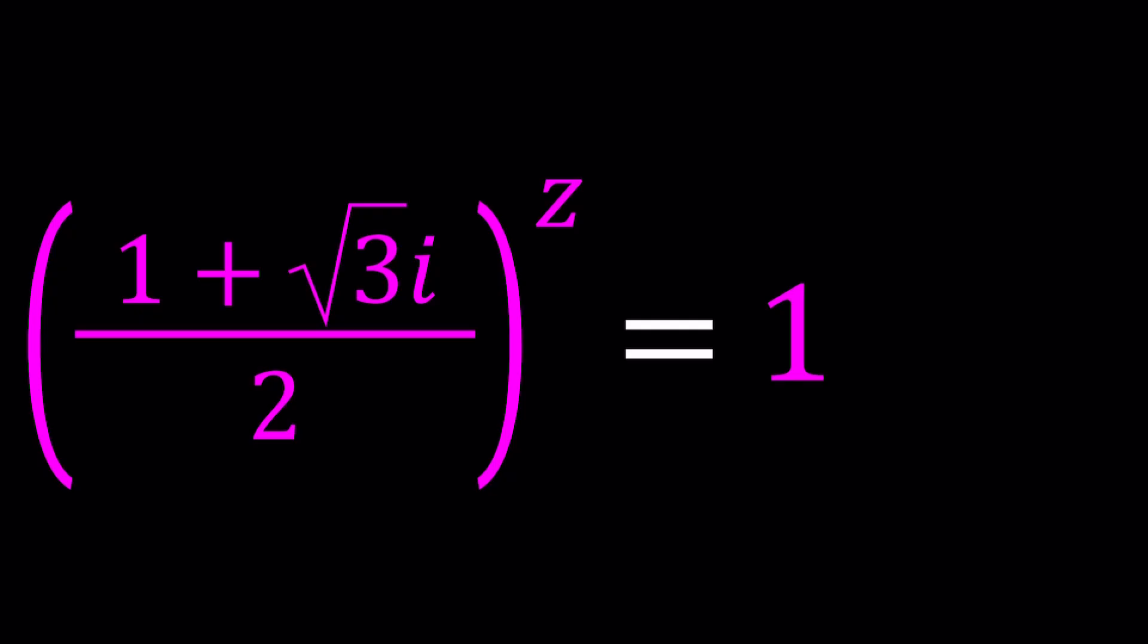We have 1 plus square root of 3 i all over 2 to the power z equals 1 and we're going to be solving for z values. We're going to be solving for all z values, all possible solutions. How many solutions are there do you think?